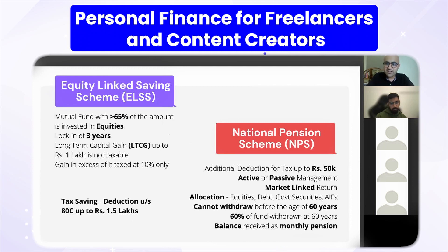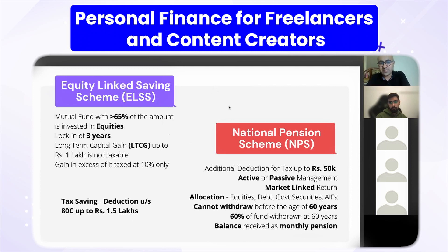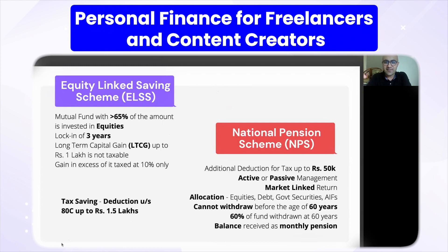Equity-linked savings schemes (ELSS) are mutual funds which invest more than 65% in equities, with the remaining in government deposits or debt. There is a minimum lock-in of 3 years, and long-term capital gains of up to 1 lakh beyond 3 years are not taxable. Any gain beyond that is taxable at only 10%. It's a great scheme that also gives you a tax benefit — tax-saving ELSS falls under Section 80C with the 1.5 lakh limit.